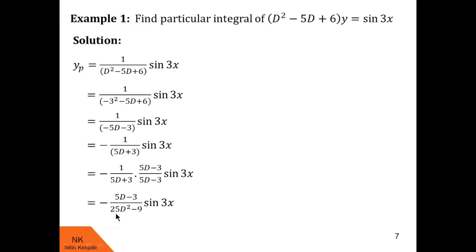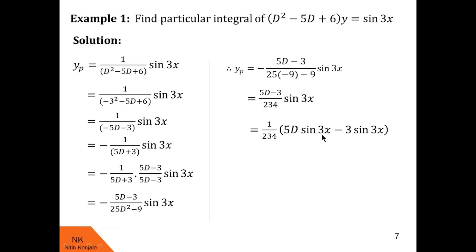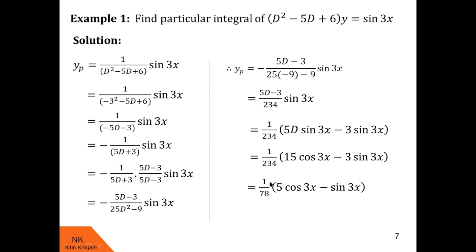We operate 1/(25d² - 9) on sin 3x, replacing d² by minus 9: 25×(minus 9) minus 9 = minus 225 minus 9 = minus 234. So the denominator becomes minus 234, and with the outer minus sign it becomes plus 234. We operate (5d minus 3) on sin 3x: 5d of sin 3x gives 15 cos 3x, and minus 3 sin 3x remains. Taking out the factor of 3 and cancelling, yp = 1/78 × (5 cos 3x minus sin 3x).